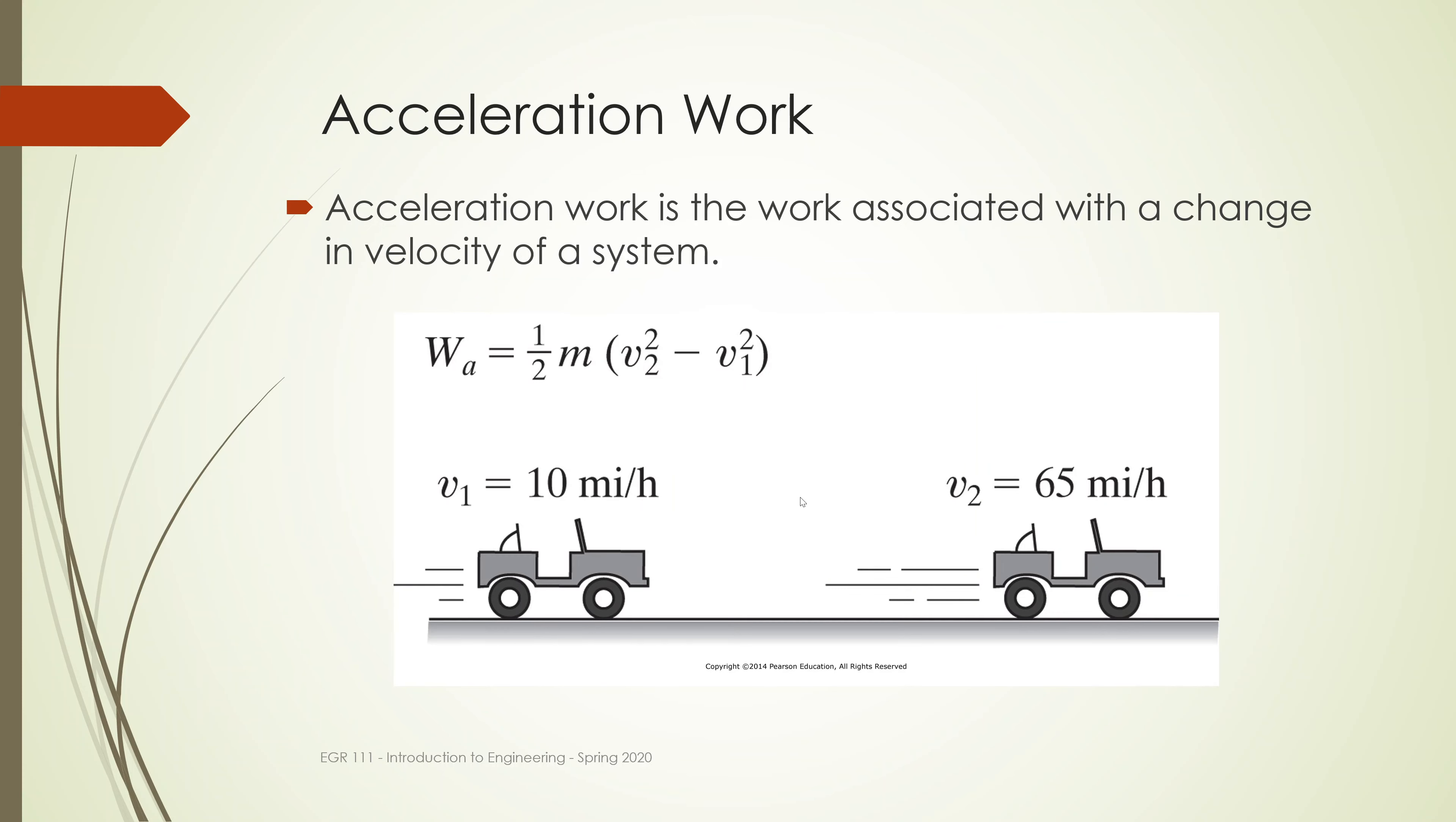Next is acceleration work. You're at a certain velocity, and work is done on or by the car to increase the velocity from some initial velocity to a final velocity. This is the work due to the change in velocity. When we look at work-energy equations, we'll see there's a balance. This is essentially our change in kinetic energy—we've done work on an object and changed its velocity from 10 miles per hour to 65 miles per hour. It's the engine that's done the work.